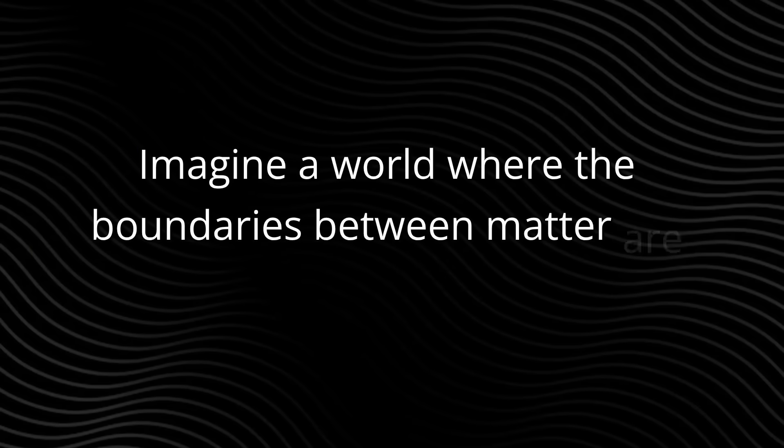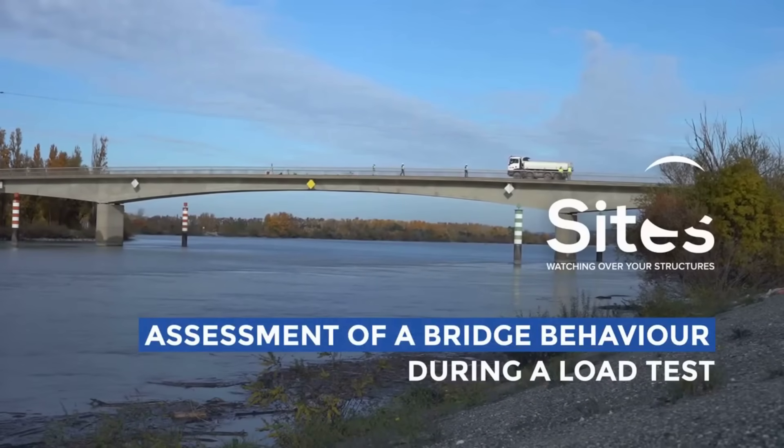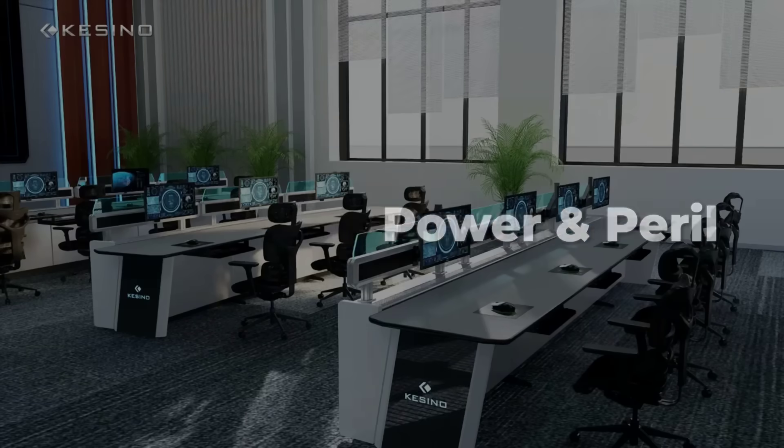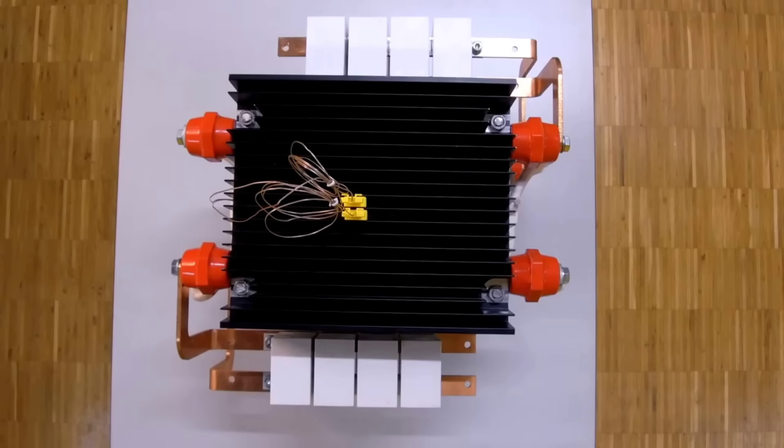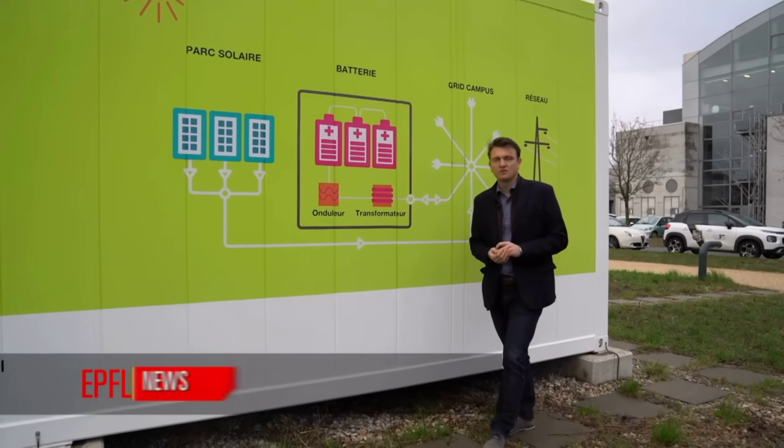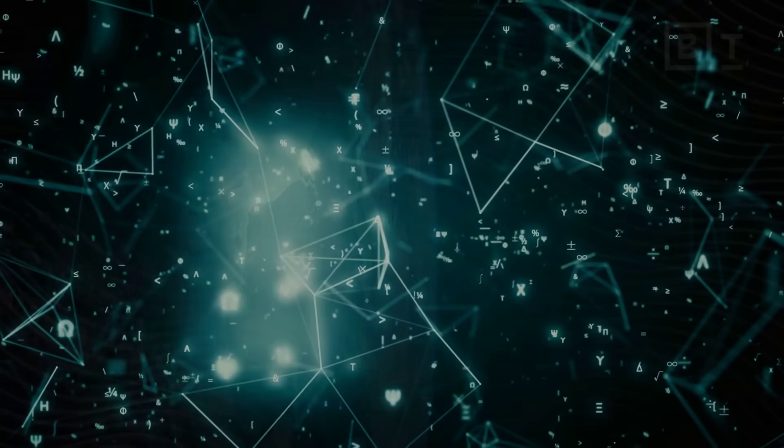Imagine a world where the boundaries between matter are less certain, where the laws that keep engines running and bridges standing are open to negotiation. The 3i signal doesn't just challenge physicists. It challenges the bargain society has made with its own tools. If this new force can be harnessed, it could offer breakthroughs in energy, communication, or medicine. But if it can't be controlled, the risks could reach far beyond power grids or data networks. When the rules change at the most fundamental level, every layer of civilization is exposed. That's why the warning rings out. Not as a distant echo from a physics conference, but as a question that reaches into every home. Are we ready to live in a world where the laws of nature themselves are up for grabs?